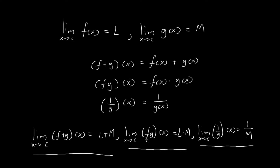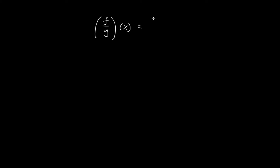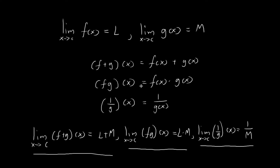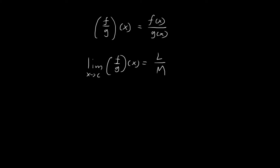Using these results, I'm going to establish some more limit laws which will help us in evaluating limits. The first limit law I'm going to establish is the quotient law. I'm going to do this by first defining the function f over g, which produces outputs equal to f of x divided by g of x. What I want to prove is that the limit as x tends towards c of f over g is equal to l divided by m. Instead of using an epsilon-delta definition, I'm going to use the results we've already established.